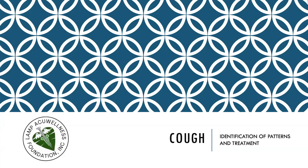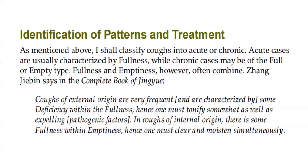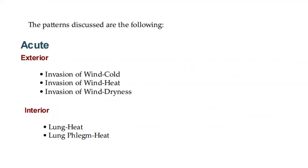Let's go to the identification of patterns and treatment for cough. Coughs are classified into acute or chronic. Acute cases are usually characterized by fullness, while chronic cases may be of the full or empty type, though fullness and emptiness often combine. Zhang Jingbin states in the Complete Book of Jingyue: coughs of external origin are characterized by some deficiency within the fullness, so one must tonify somewhat as well as expelling pathogenic factors. In coughs of internal origin, there is some fullness within emptiness, so one must clear and moisten simultaneously.